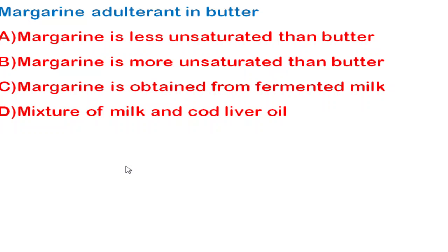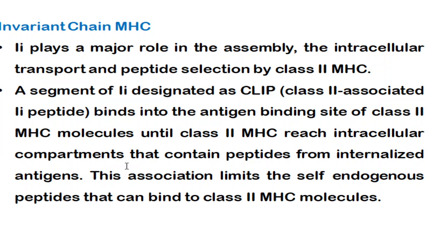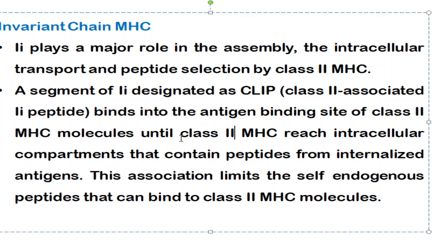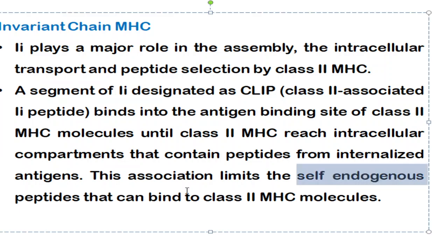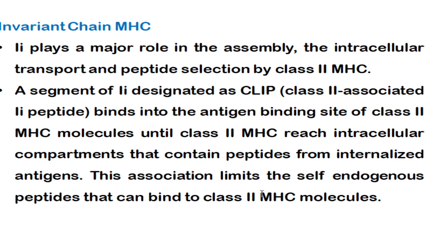The next question is about the invariant chain of MHC. The invariant chain plays an important role in assembling and intracellular transport of MHC, and is also involved in peptide selection. There is a special segment called CLIP — Class 2 Associated Invariant Peptide — which binds to the antigen peptide-binding site of the Class 2 MHC molecule until it reaches the intracellular compartment containing peptides from internalized antigen. The invariant chain protects the MHC by preventing it from binding to self-endogenous peptides.